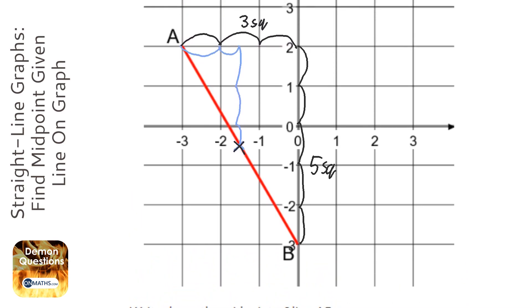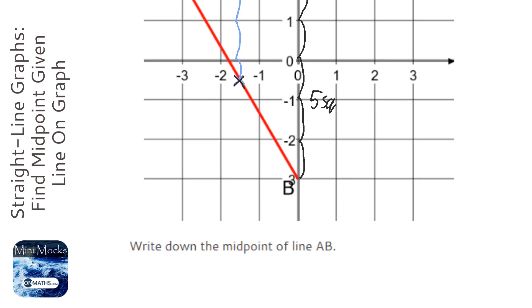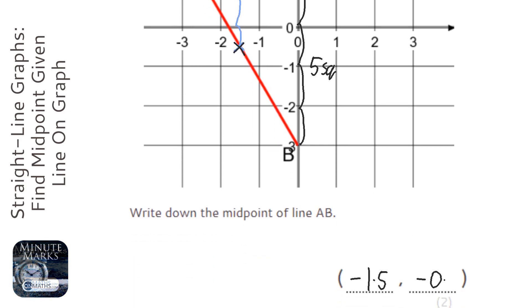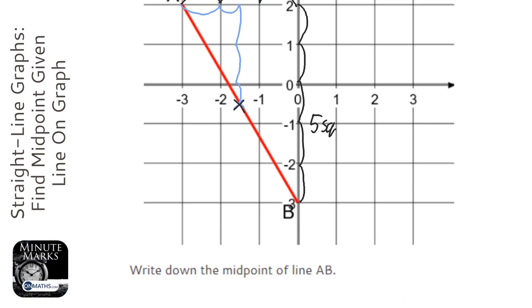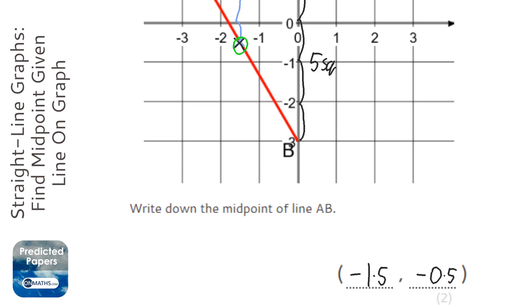And then when we went down, we went down from a height of 2 on the y-axis, and we went down 2 and a half squares. So we're going to be at minus 0.5. And you can read this off by looking at the coordinate here. It's halfway between minus 1 and minus 2, which is minus 1 and a half, and it's halfway between 0 and minus 1, which is minus 0.5.